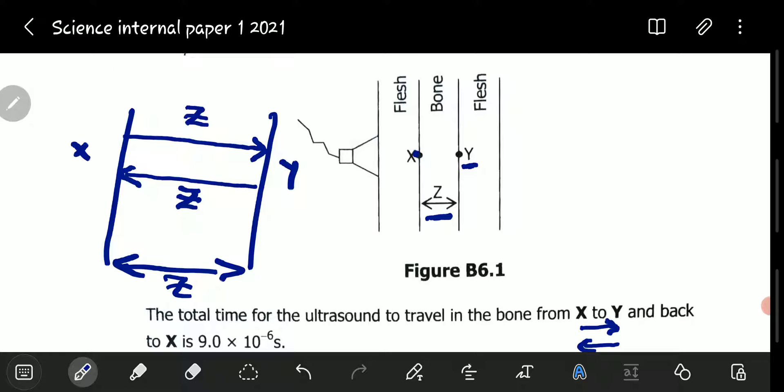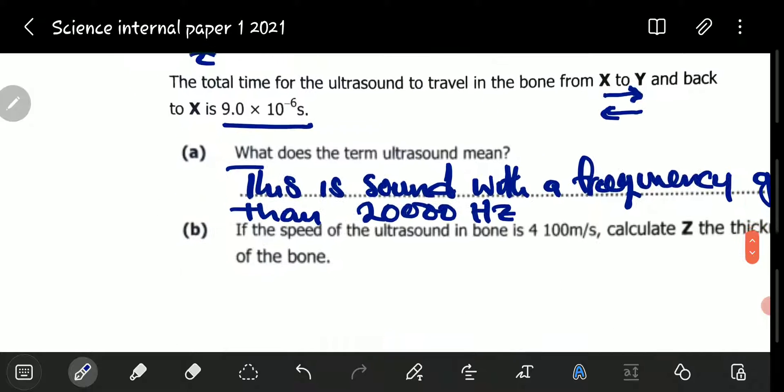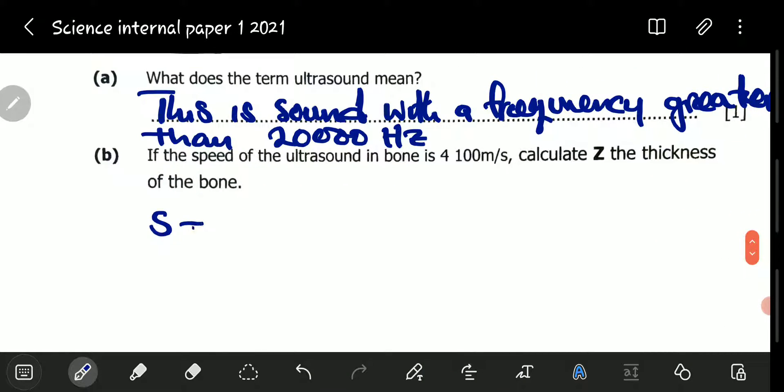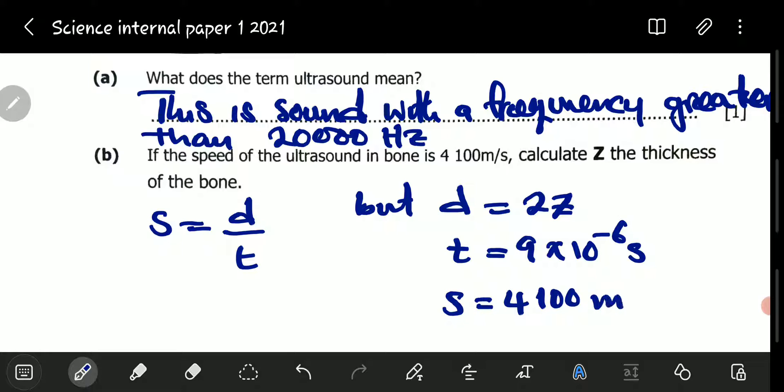The total distance covered by the sound, so distance in this particular case, will be equal to 2Z. The total distance covered by the sound in a time of 9 times 10 to the power negative 6 seconds is equal to 2Z. We know that speed is equal to distance over time.